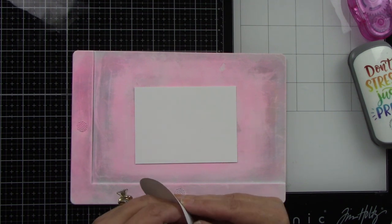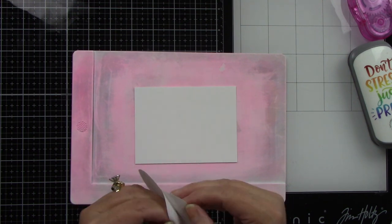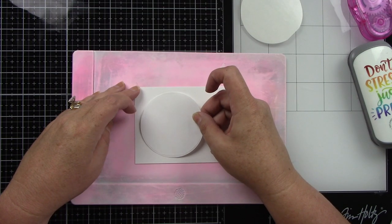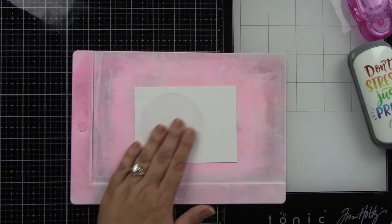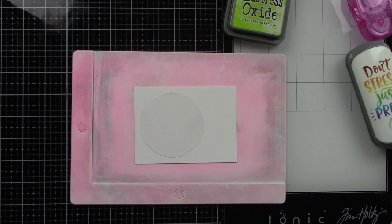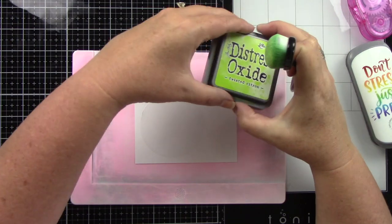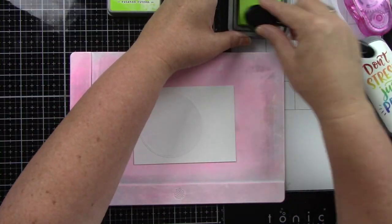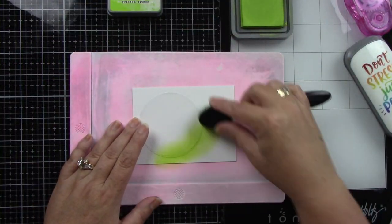I'm placing this on a card panel cut down about a half inch on all sides smaller than A2 size. I want to create a moon, so I'm making a mask. Then I can get my ink blending going—this will be our background for the fun witch images.